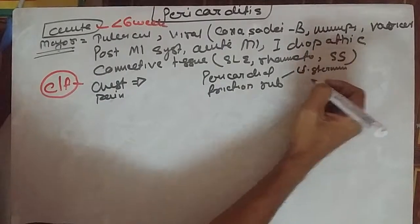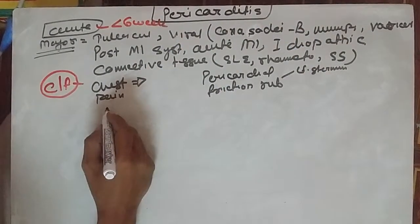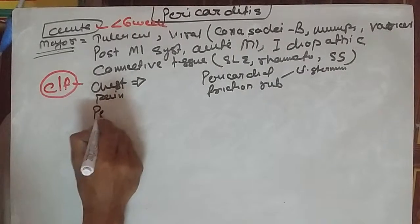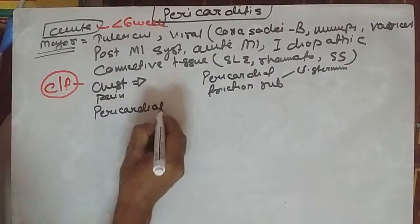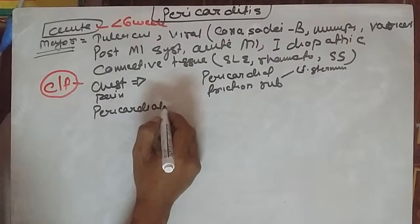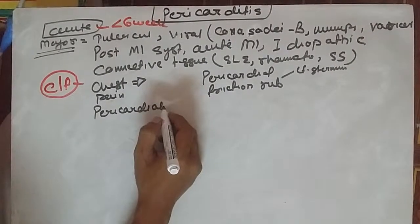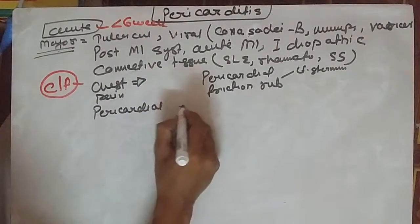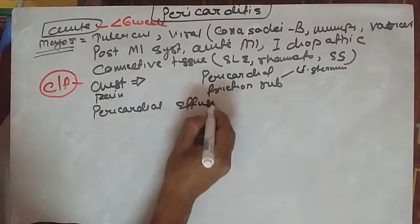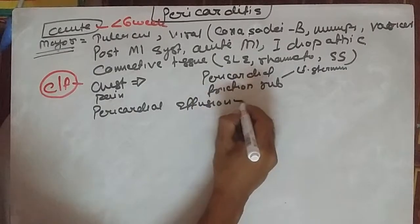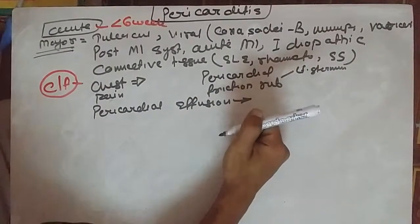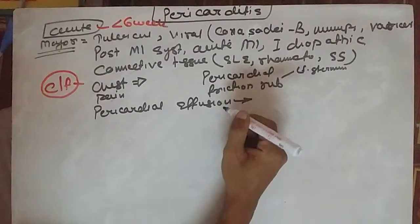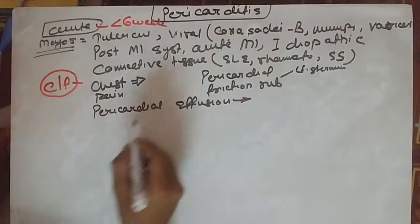Other symptoms include pericardial effusion. If there is pericardial effusion, on percussion there will be dullness present. Pericardial effusion means there is fluid, which can be exudative, transudative, blood, or purulent fluid in the pericardium.